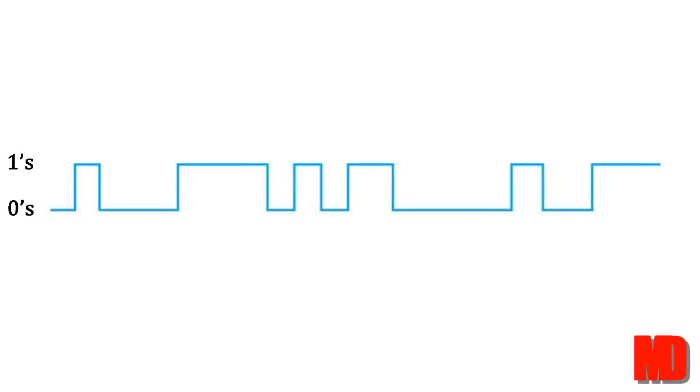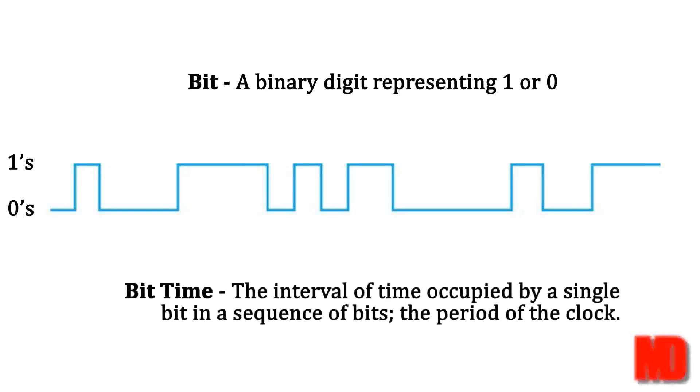Each of these pieces of information is called a bit, and the amount of time spent reading the incoming pulse train to determine if the signal is high or low is called a bit time.